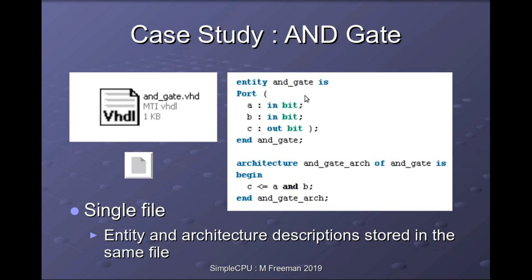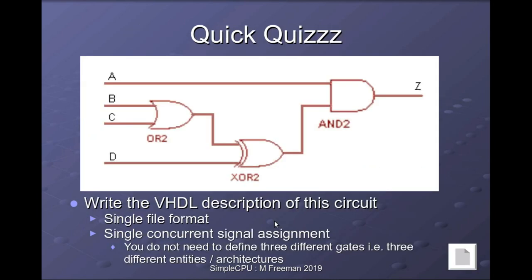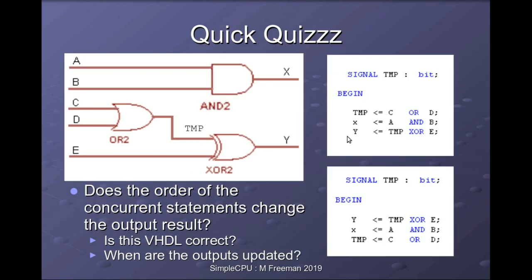Quick quiz: can you write the VHDL description for a given circuit? You could either have separate files describing an OR gate, an exclusive-OR gate, and an AND gate and combine them, or implement it in a single file defining a hardware component with inputs A, B, C, and D and output Z. You may want to pause the video and think about that; compare your answer to the one on the module web page.